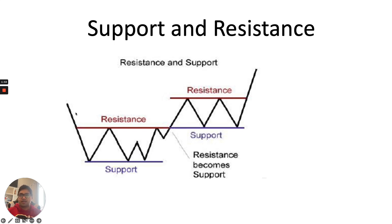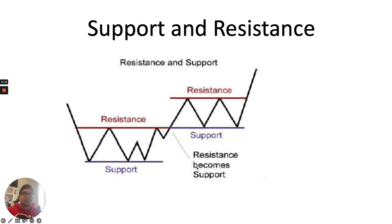Whenever a stock comes to a support, it generally bounces back up because new buyers enter and it goes up. When it goes to a resistance, it generally comes down because it faces resistance from the sellers. So supports and resistances are levels at which the stock changes direction — on a support, the downtrend reverses and an uptrend starts; at resistance, the uptrend reverses and a downtrend begins.